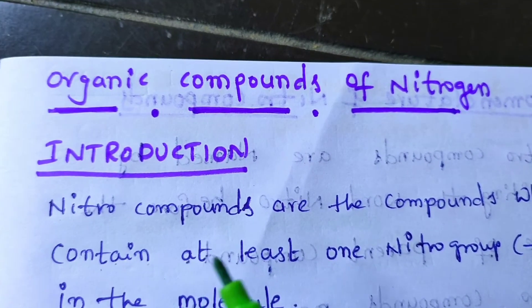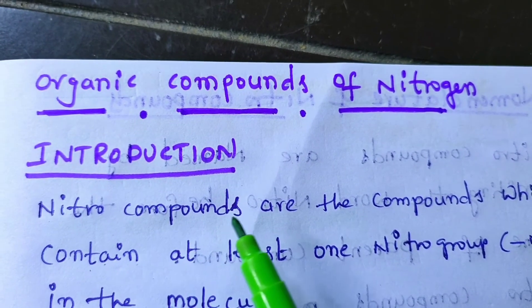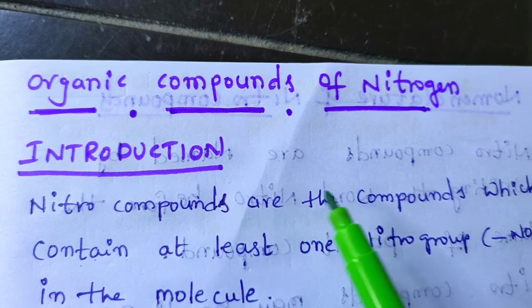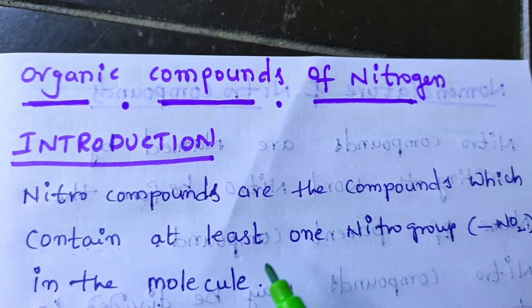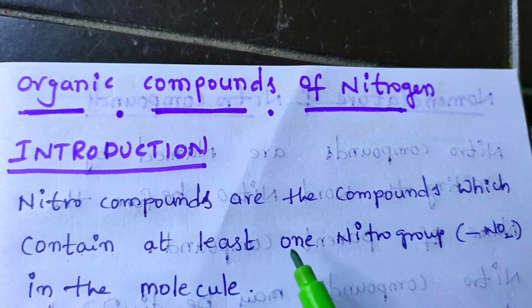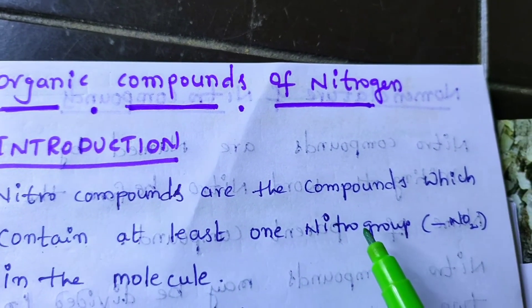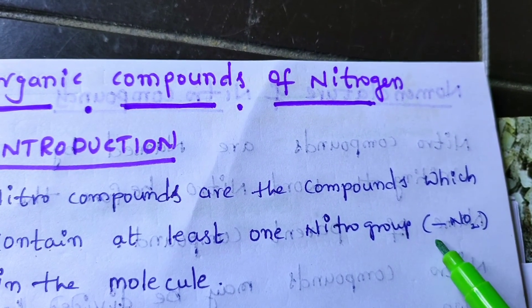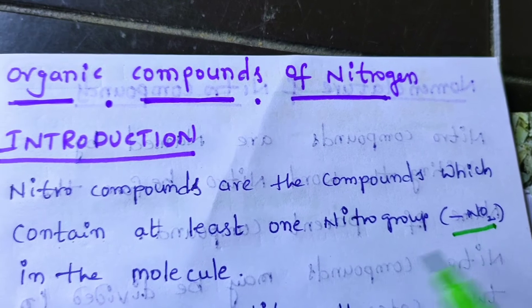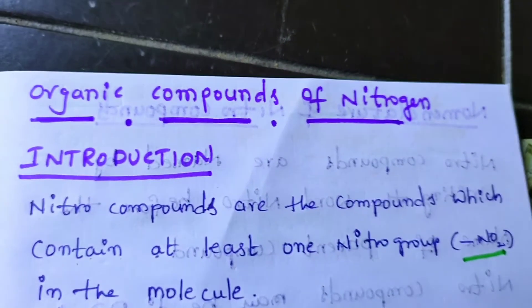See here, nitro compounds are the compounds which contain at least one nitro group, that is the NO₂ group, in the molecule.